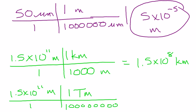That's a million and three more zeros. That's a billion and three more zeros. That's a trillion. So take 1.5 times 10 to the 11th divided by 1,000,000,000,000. And you should get 0.15. 0.15 terameters.